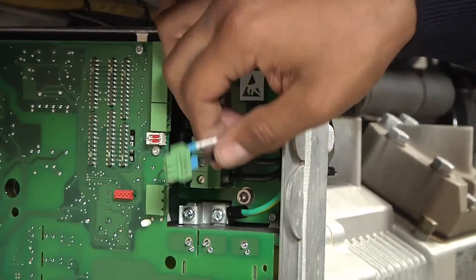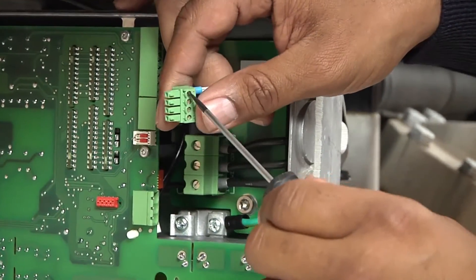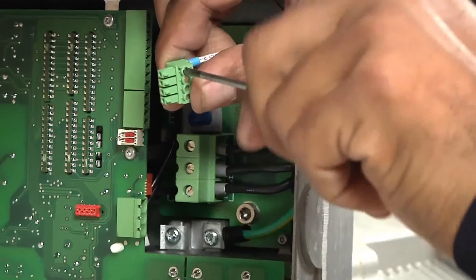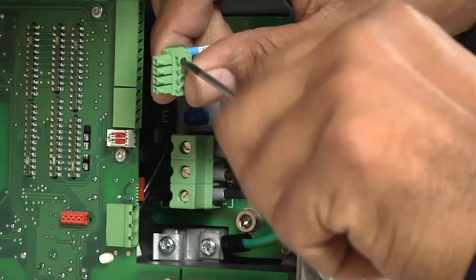Now dismount the frequency converter communication cable on terminal X100 and the power supply cable.